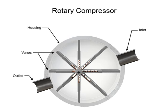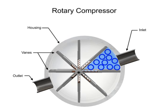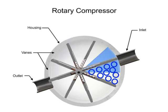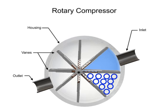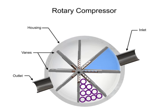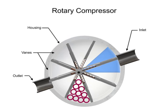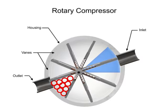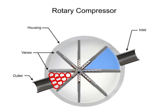Air enters at the largest chamber. As the vanes rotate, they retract, causing the chamber to get smaller and compress the air. Air exits at the smallest chamber.